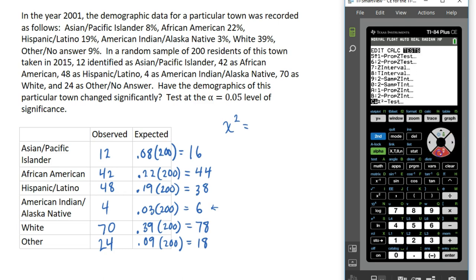Once you have your observed and expected values entered, we are going to press stat again. We are going to go over to tests, and we are going to do the chi-square goodness of fit test. That's option capital D on your list of statistical tests. It should say chi-square GOF test. We are going to press enter.